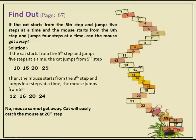The mouse cannot get away. The cat will catch the mouse at the 20th step. When the cat is on the 10th step the mouse is on the 12th, when the cat is on the 15th the mouse is on the 16th, and when the cat reaches the 20th step the mouse is also on the 20th step — so the cat catches the mouse.